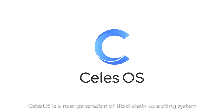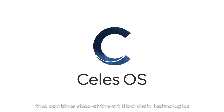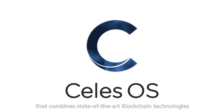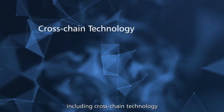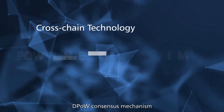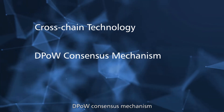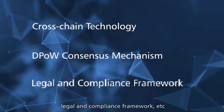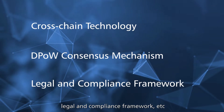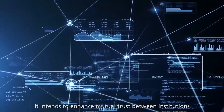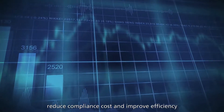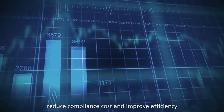Cellus OS is a new generation of blockchain operating system that combines state-of-the-art blockchain technologies, including cross-chain technology, D-POW consensus mechanism, and legal and compliance framework. It intends to enhance mutual trust between institutions, reduce compliance costs, and improve efficiency.